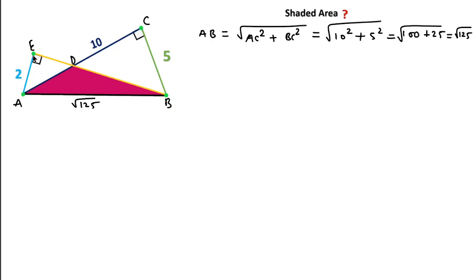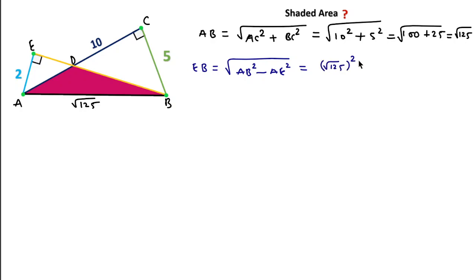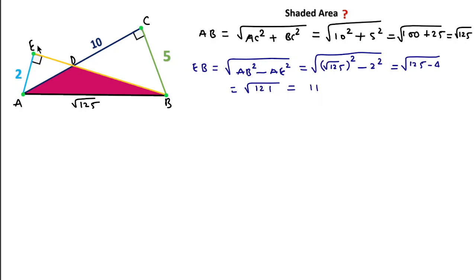In triangle AEB, AB is the hypotenuse, so we can write EB equal to √(AB² − AE²). AB is √125 and AE is 2, so EB = √(125 − 4) = √121 = 11. So EB length will be equal to 11.